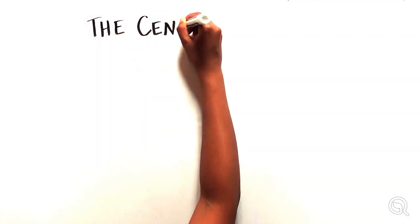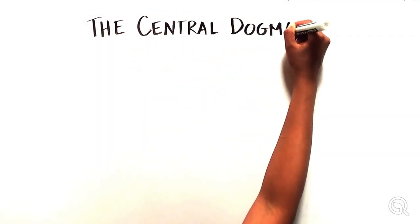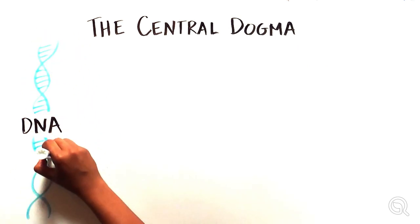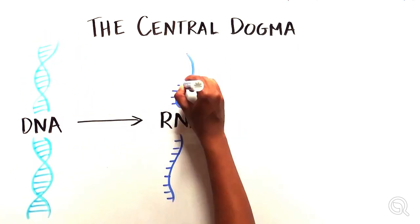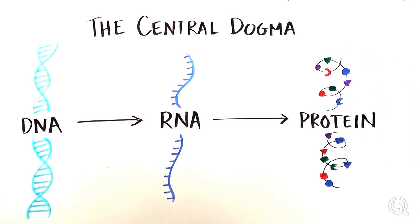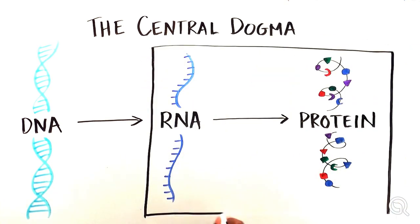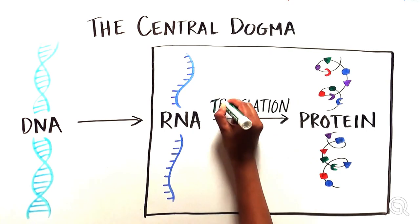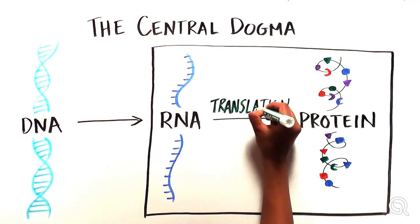The central dogma is one of biology's most fundamental principles. It states that DNA provides the instructions to make RNA, which in turn directs the production of proteins. Here we'll be focusing on the second part of this process, where RNA guides the creation of proteins, also known as translation.